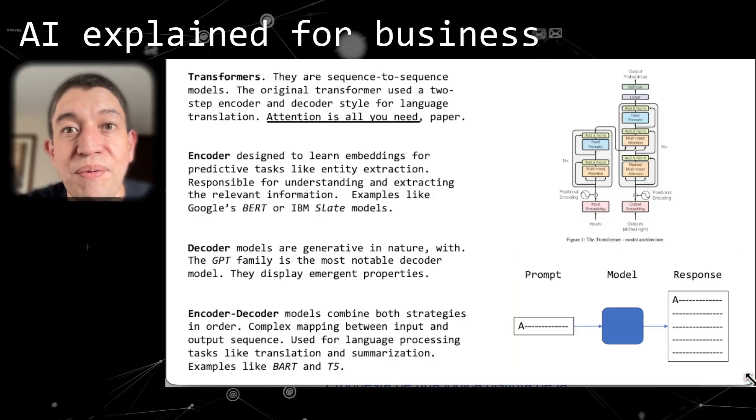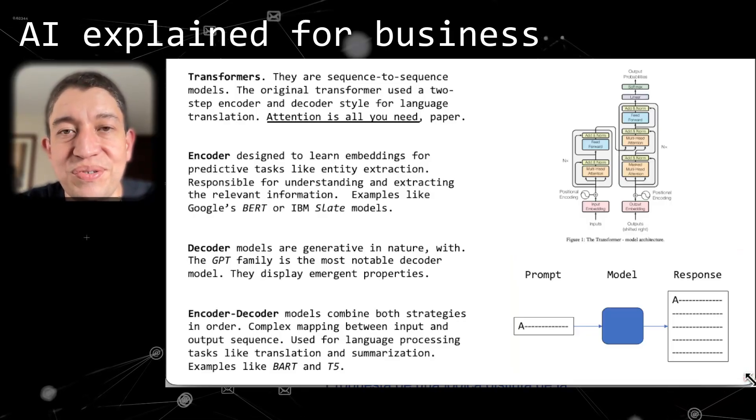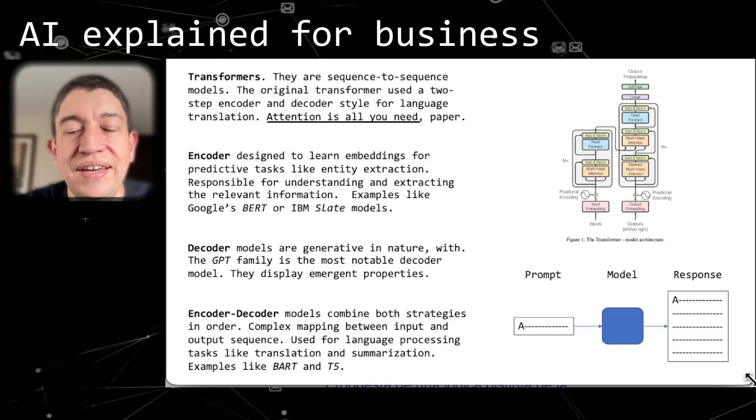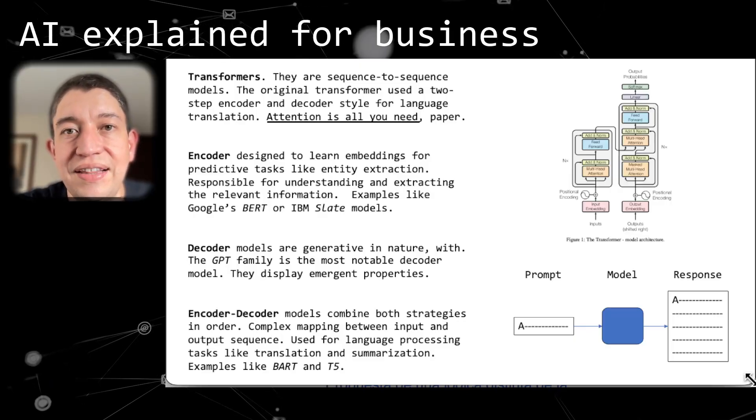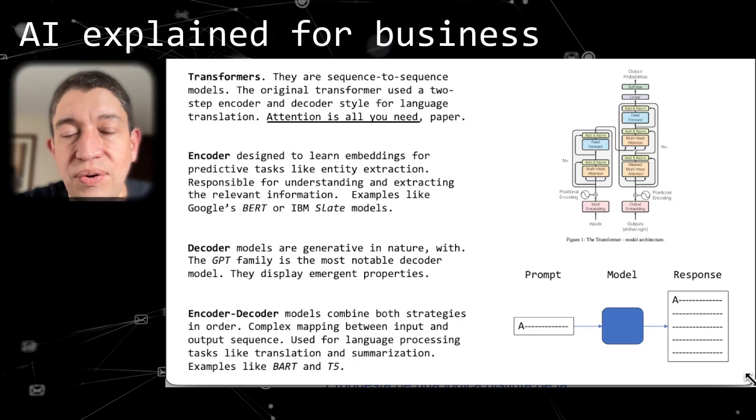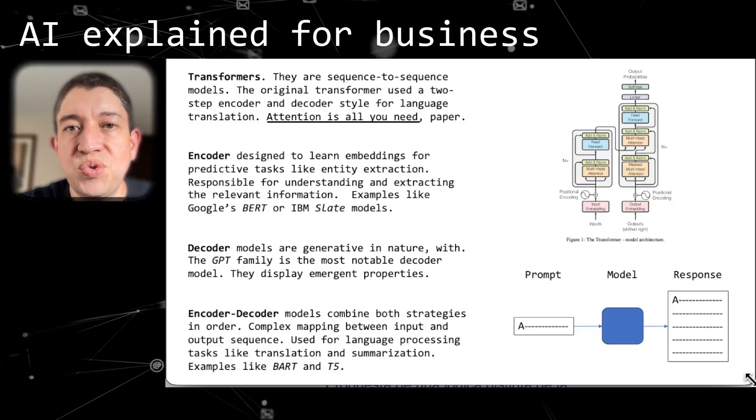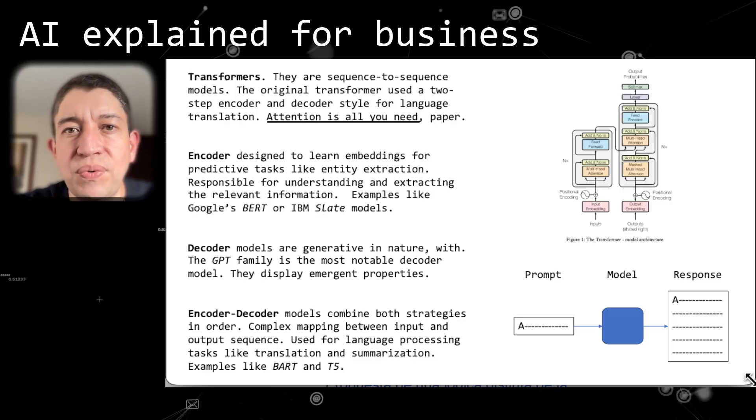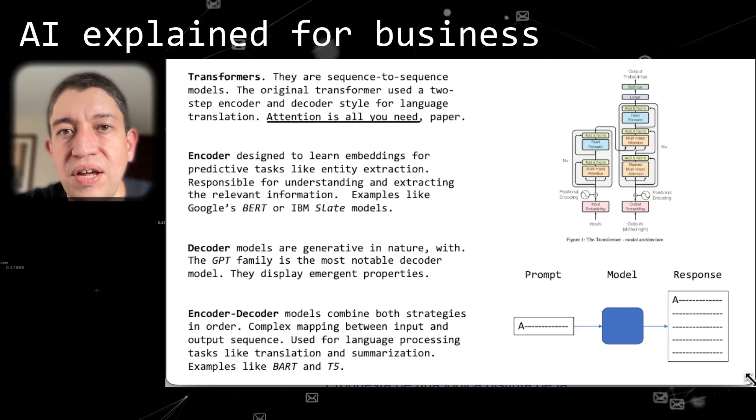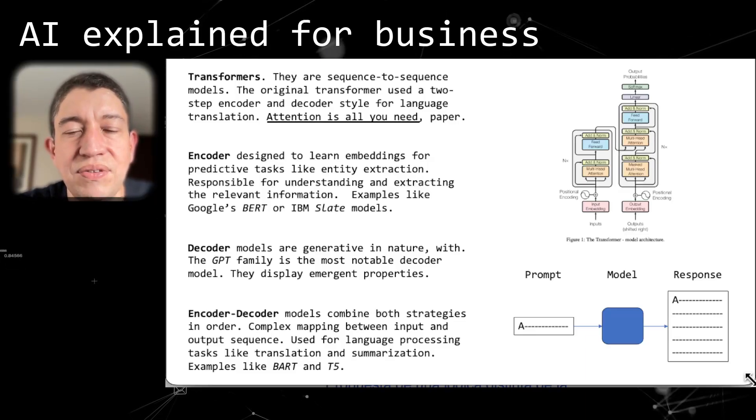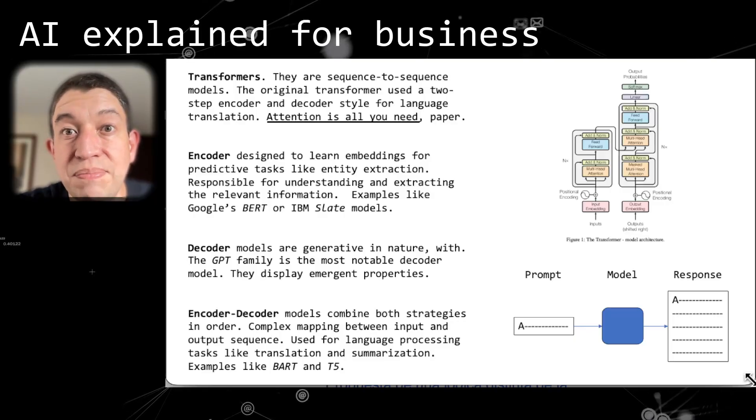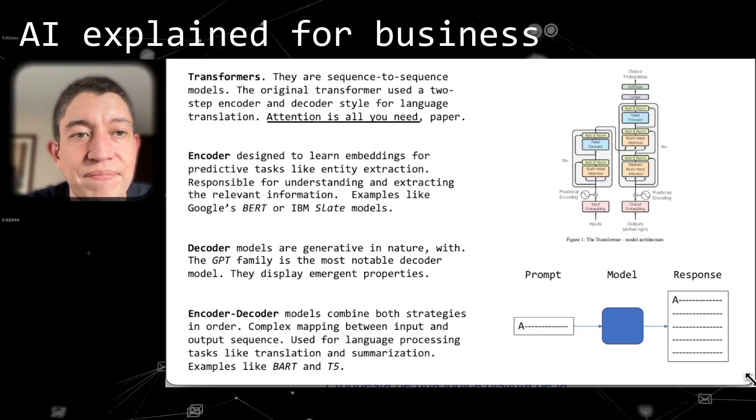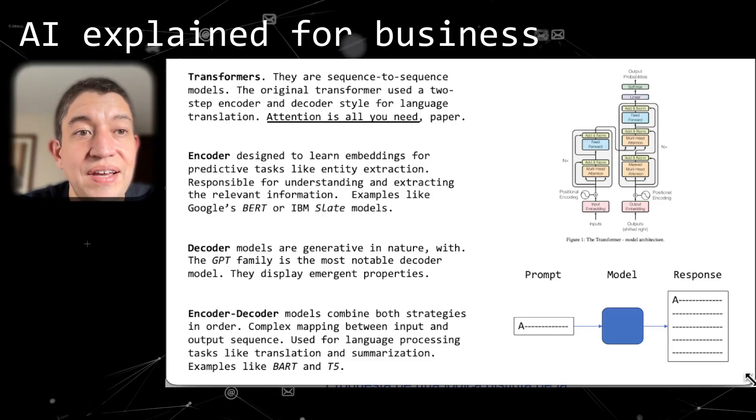As you can see in the diagram at the bottom, you have a small prompt and get a long response. Then you have the combo, the encoder-decoder, which was the original transformer. It combines both strategies in order - initially it does the encoding, has a hidden state layer in between, and then does the decoding. It's best used when it's a complex input versus output sequence, where the length of the input and output don't match and the concepts can be totally different. This hidden layer, this pivot-style architecture, is best for use cases like language translation and summarization.